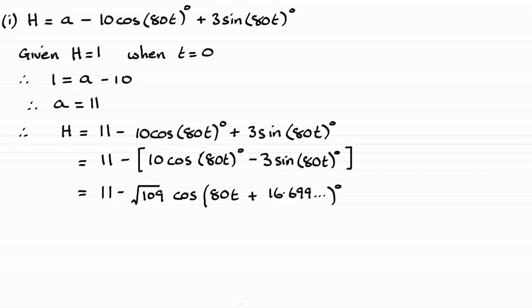So if we just put this in, that maximum value of h is going to be 11 plus the root of 109, when the cosine of all of that bracket there equals negative 1.